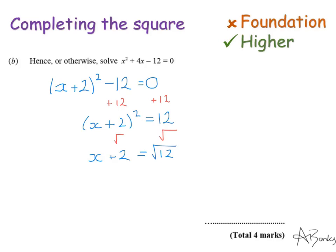My final step to find out what x is will be to minus 2 from both sides. So that's x equals, and I always write the number first, so I'm going to write the minus 2 at the front plus root 12.